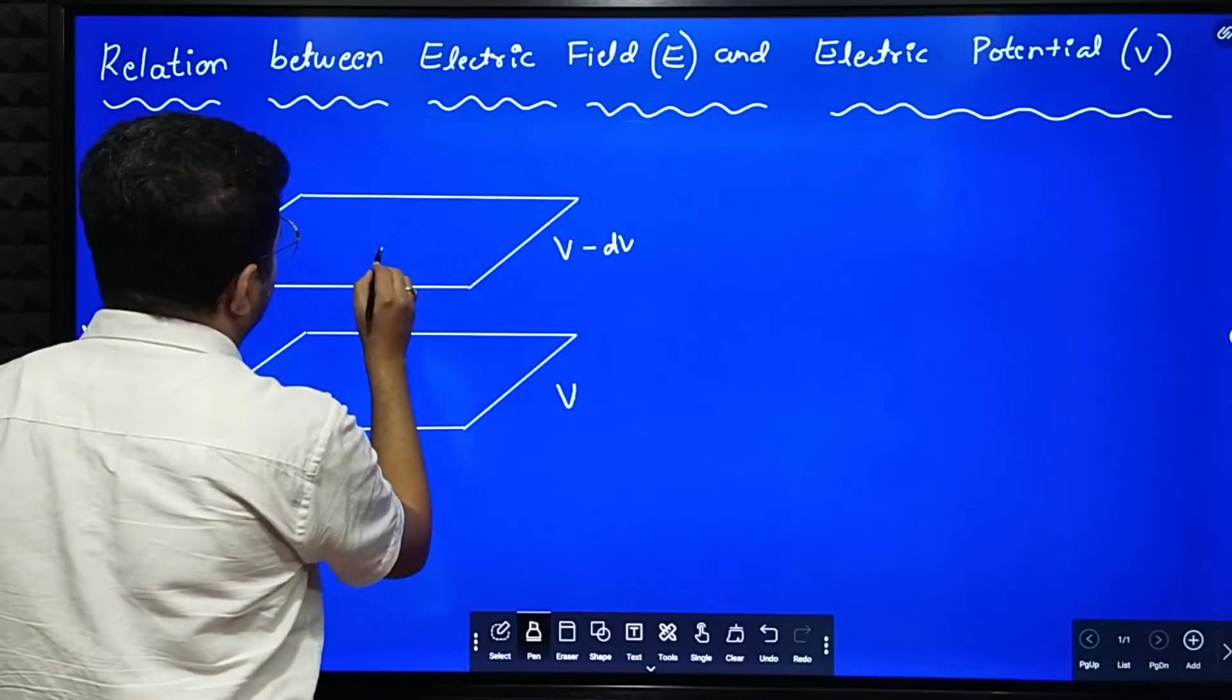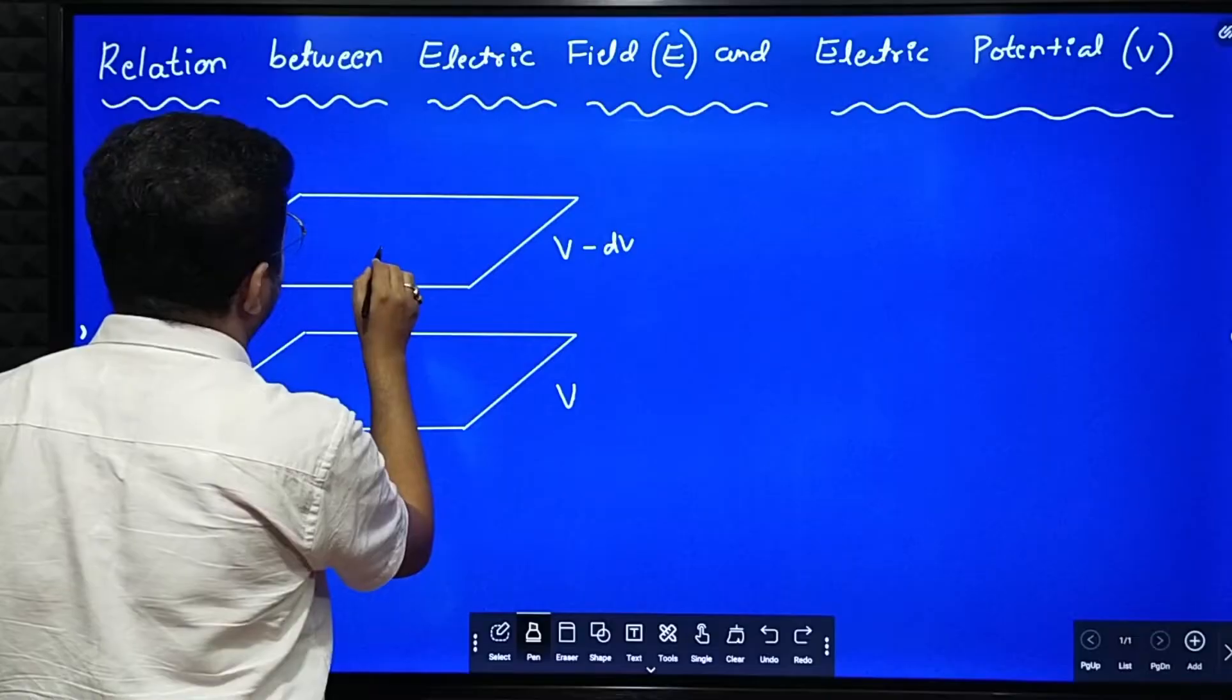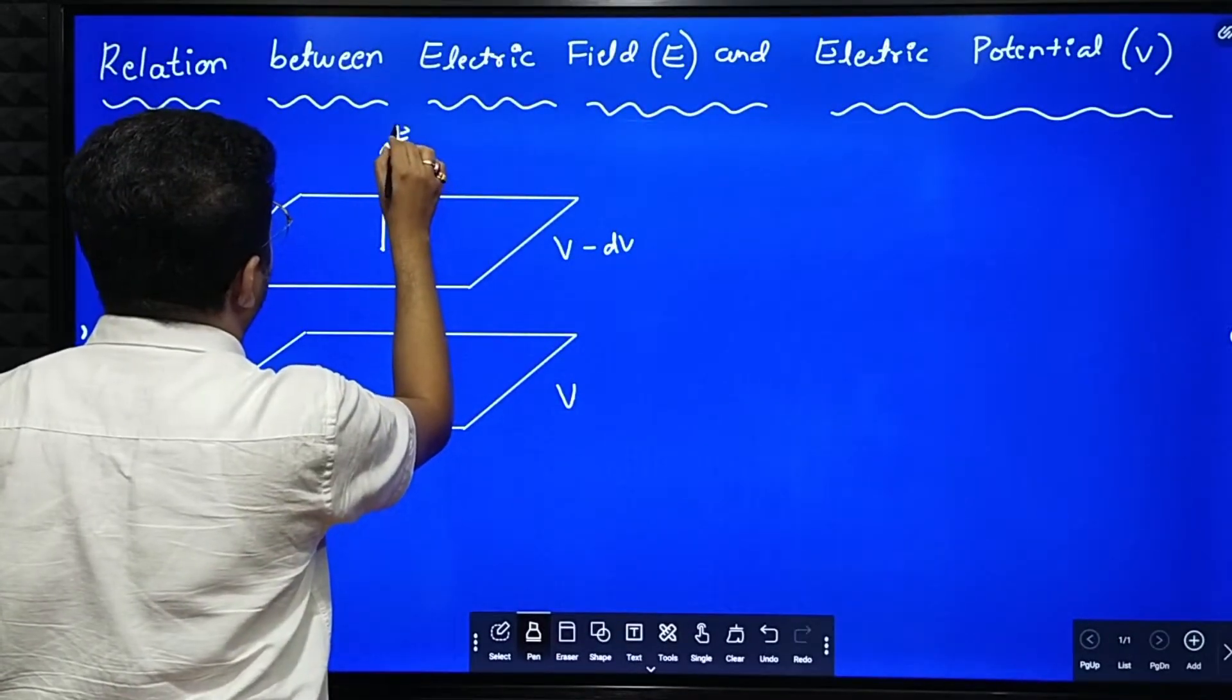Say this is the direction of electric field. Electric field let it be upwards. This is the direction of electric field.